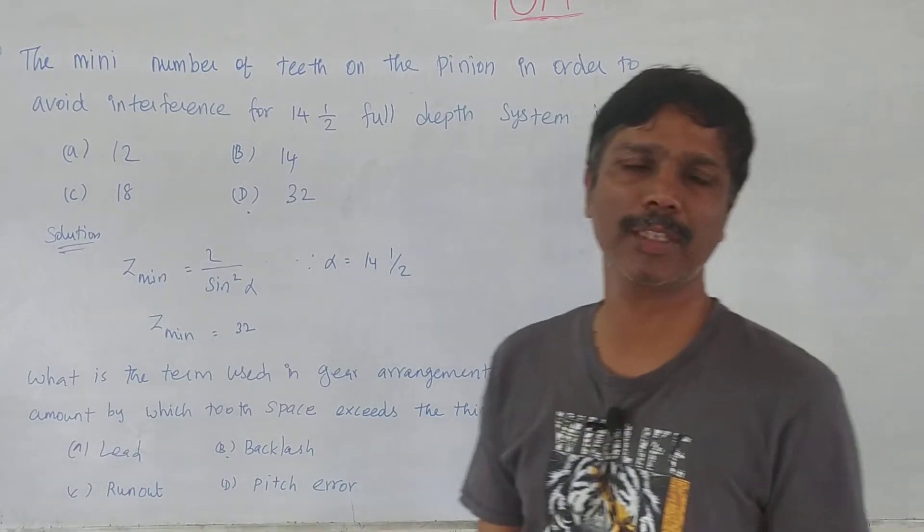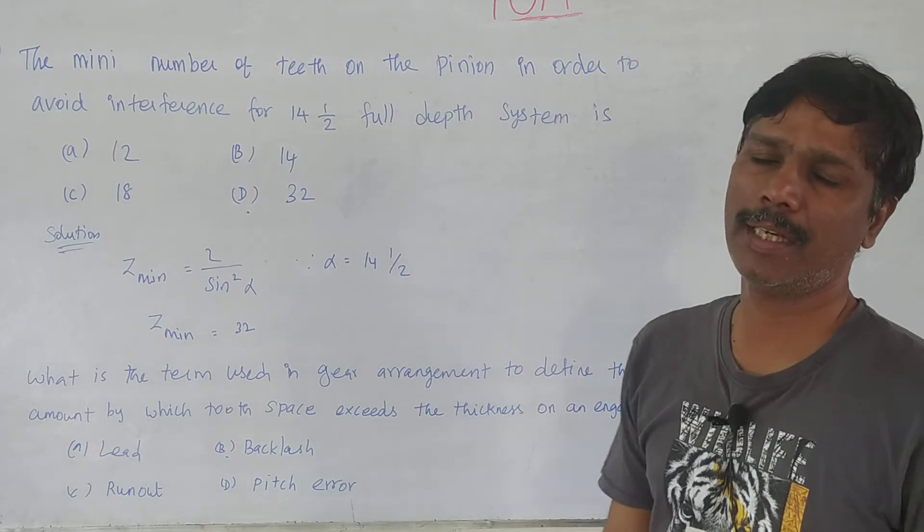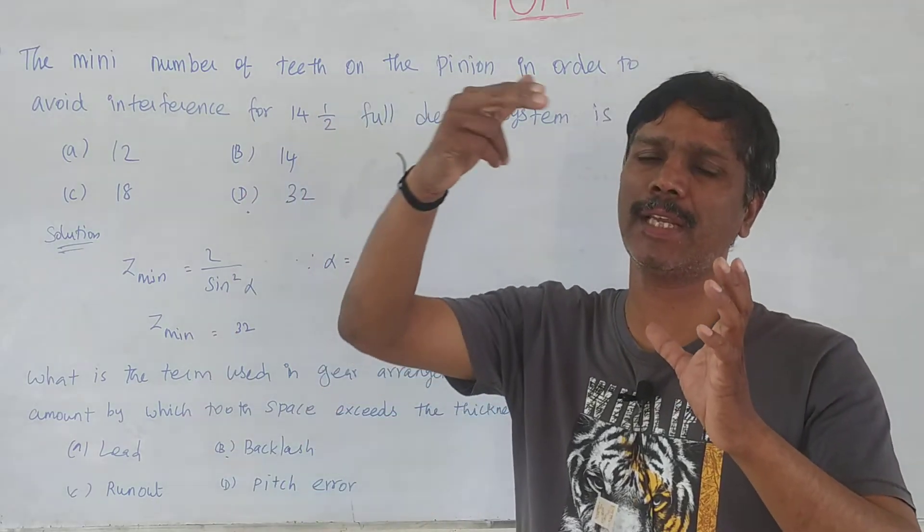This is Professor Austin from government college. I am going to talk about minimum number of teeth in order to avoid interference. Interference is a tip of the gear.